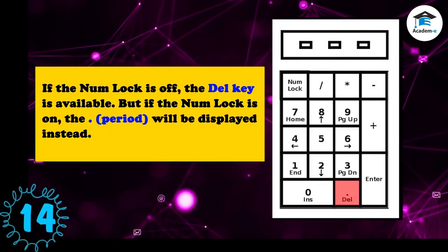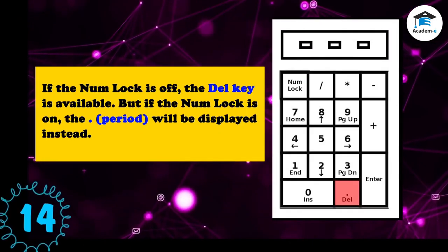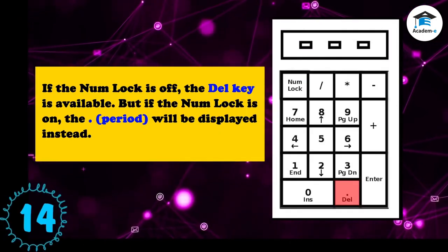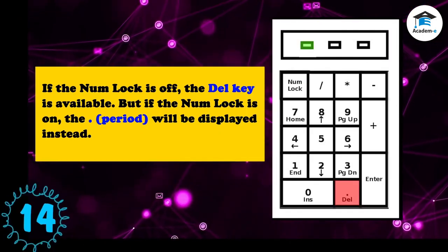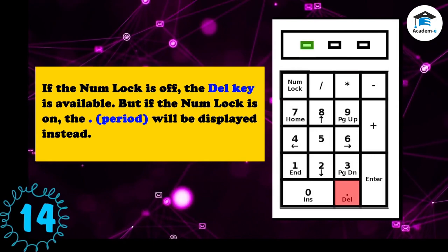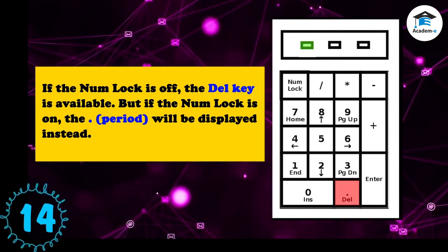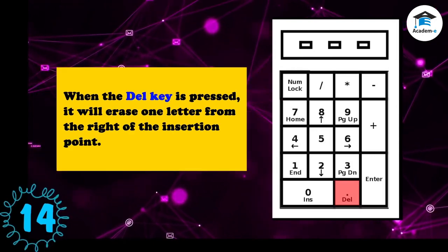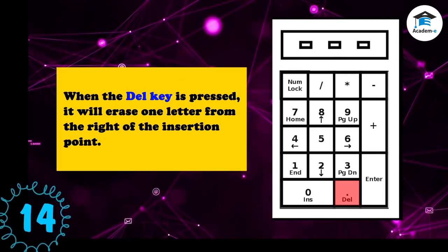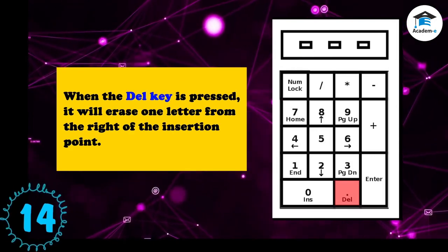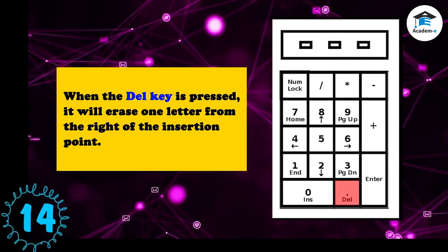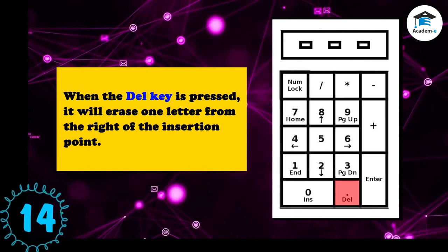When the Del key is pressed, it will erase one letter from the right of the insertion point. If the Num Lock is off, the Del key is available, but if the Num Lock is on, a period will be displayed instead.